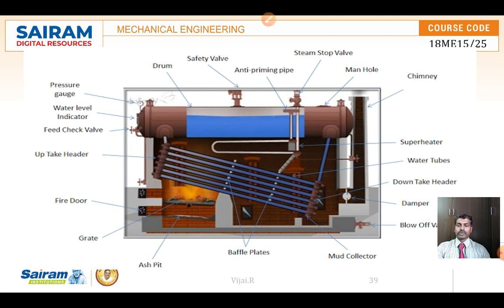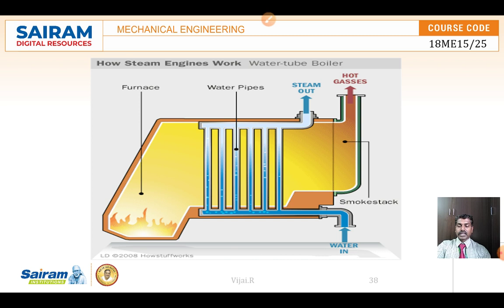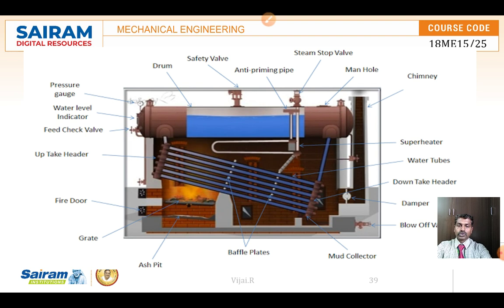Now let me see the construction of this horizontal drum water tube boiler. You can see the water is filled to half the amount of the boiler. There are two important pipelines: the downtake header and uptake header. These are useful for steam generation. Water passes through the downtake header, absorbs heat from the hot flue gases and becomes steam, then moves to the uptake header on the left side.